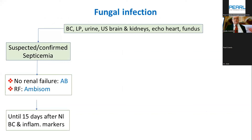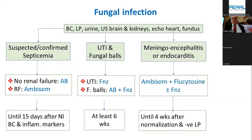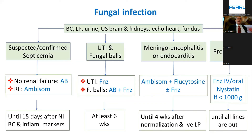For fungal infection: if no renal failure, the first and cheapest choice is amphotericin B. If the patient has renal failure, ambisome is better, for up to 15 days after normalization. If the patient has UTI or fungal ball, ambisome doesn't cross well to the urine, so amphotericin B is better. For UTI only, fluconazole is enough. For fungal ball, ambisome plus fluconazole until six weeks after normalization. For meningoencephalitis, ambisome plus flucytosine and possibly fluconazole until four weeks after normalization. For prophylaxis, the choice is between nystatin and fluconazole IV every three days, though studies on nystatin in the Cochrane review are of poor quality.